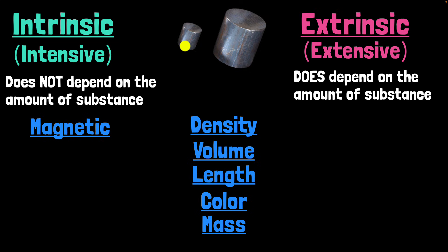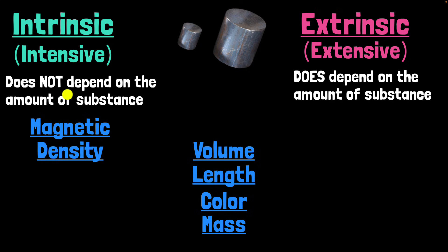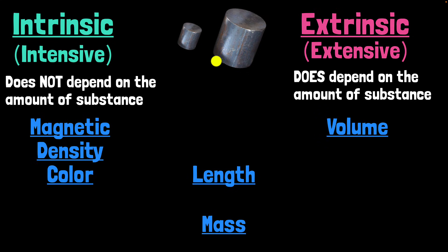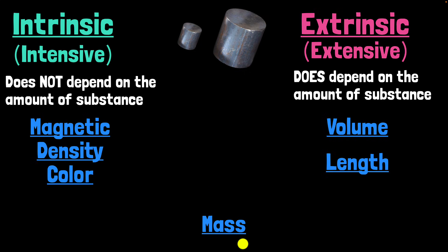Similarly, think about color. Iron is grey regardless of how much iron you have, so color is also an intrinsic property. Now think about volume — volume does depend on the amount of substance you have. A larger piece has a bigger volume; a smaller piece has a smaller volume. So volume is an extrinsic property. Similarly, length depends on the amount of substance — this piece has a bigger length, that one has a smaller length — so length is extrinsic. And mass: this piece has more mass compared to the other one, so mass depends on the amount of substance and is also extrinsic.